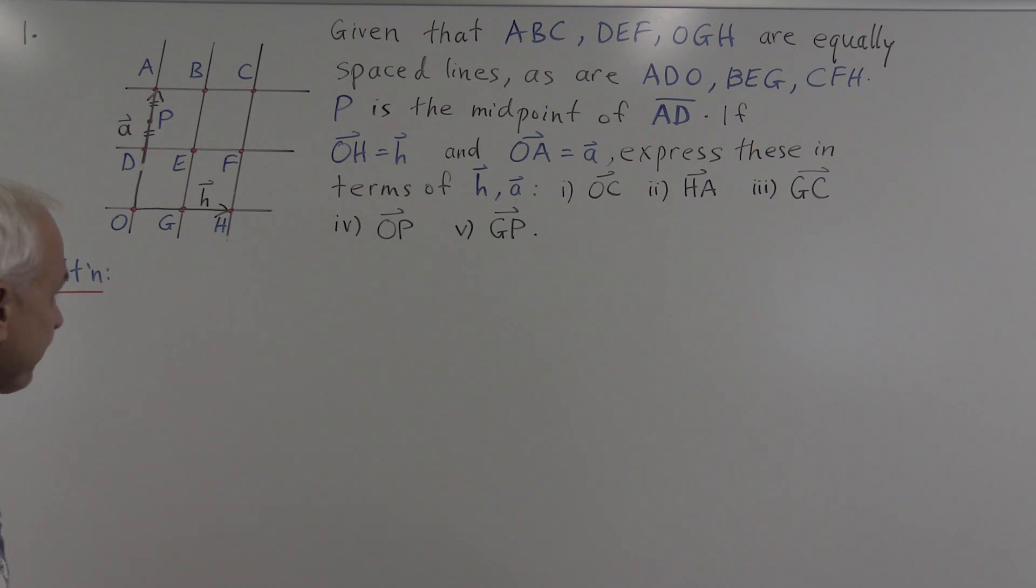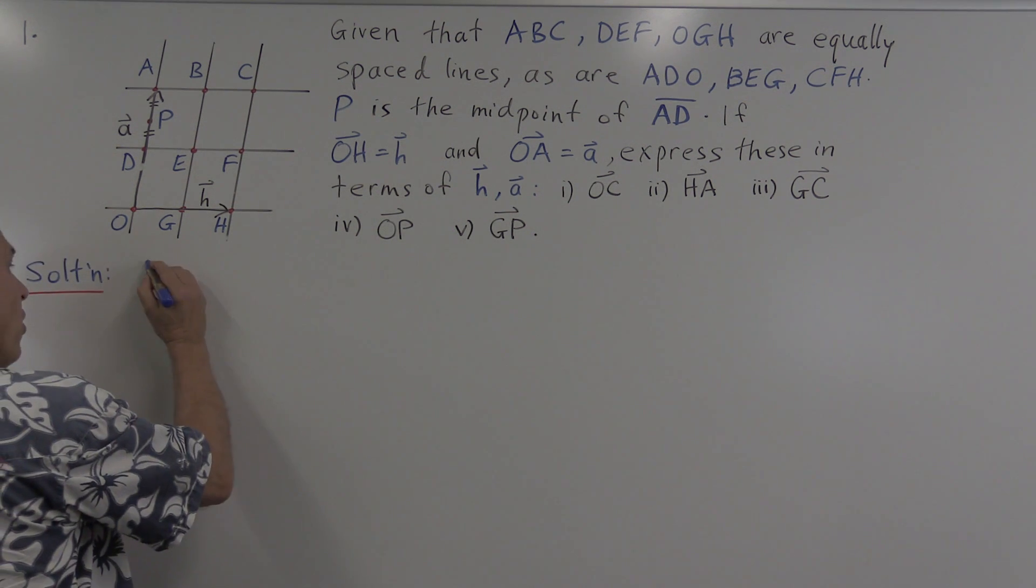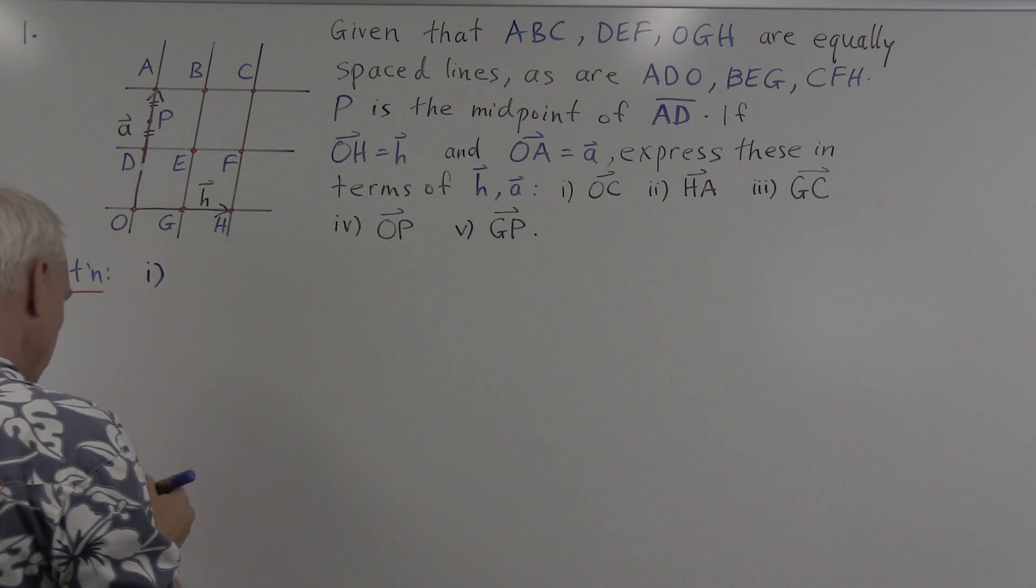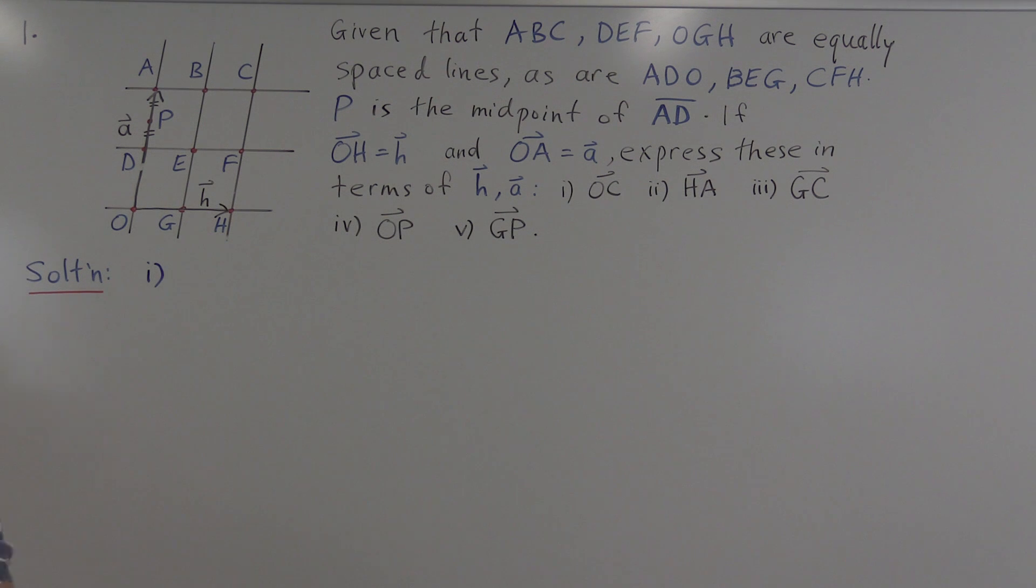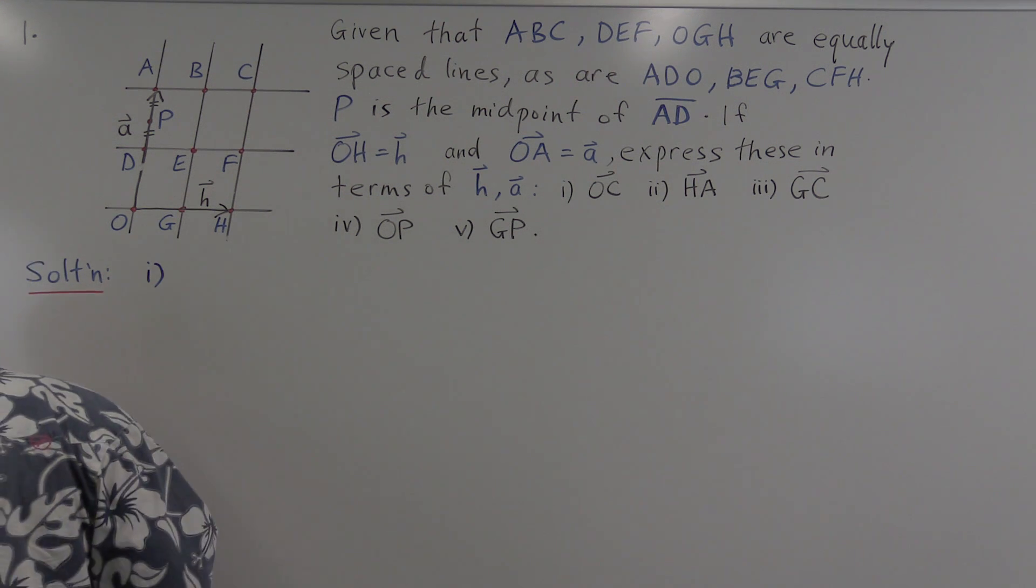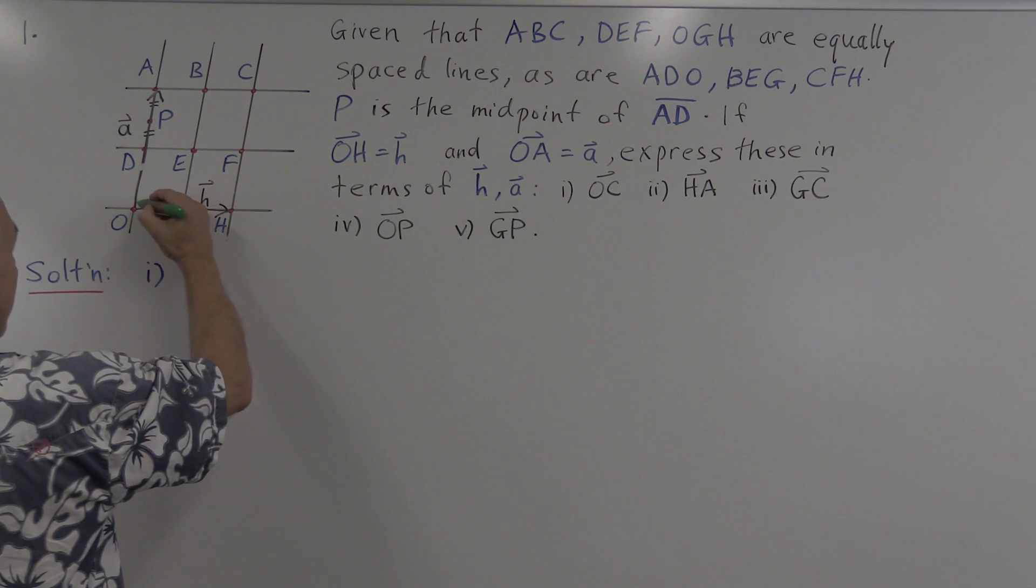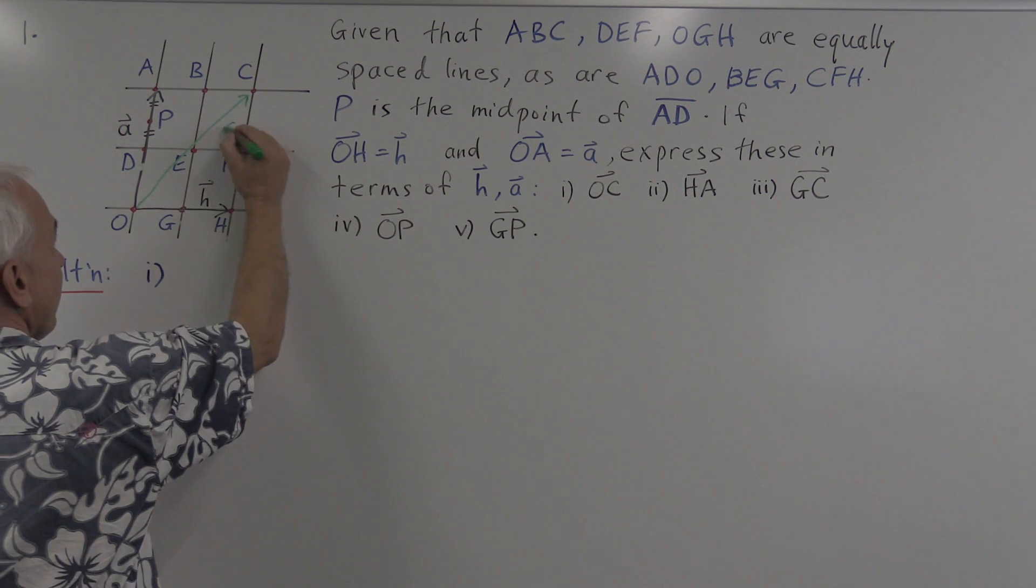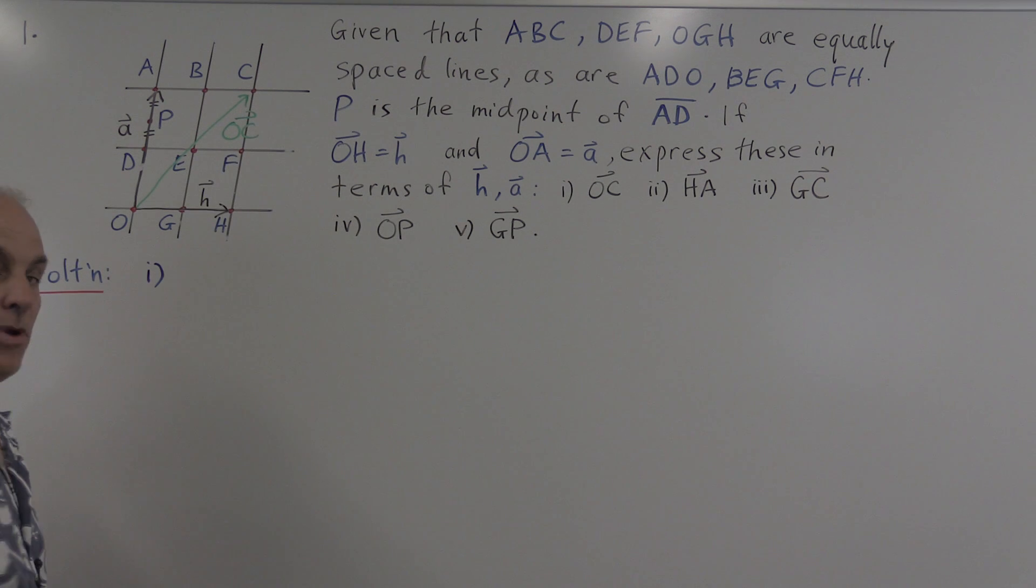Alright, so let's have a go. Let's start with OC. From O to C, how do we get there? Well, let me introduce a different color so maybe we can see things a little bit clearer. We want to go from O to C. Here's the vector OC. And we want to do it in terms of h and a.